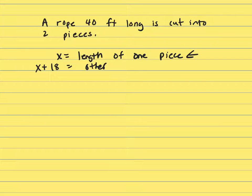If one piece is X and the other one is X plus 18, and the rope is 40 feet long, then if I take the short piece plus the long piece, that makes up the total distance of the rope, and that equals 40.